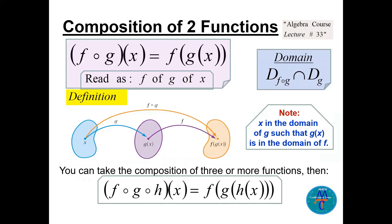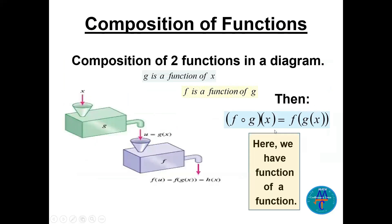Composition of two functions we have seen in the algebra course lecture number 33. We will use that here in this course also. Composition, another way we can have function of a function. f circle g of x means f(g(x)). x will be replaced in g and then whole g is replaced in f.